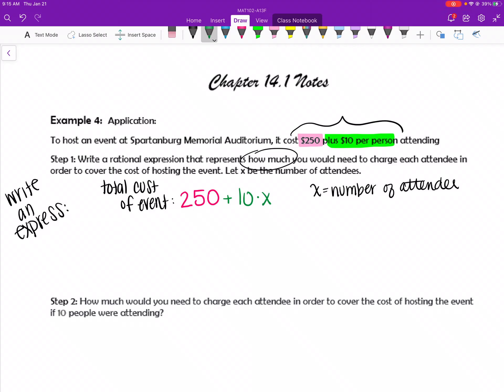And so I want to divide that out by the total number of attendees. So if there were 10 people, I would want each person to pay a part of it because I am dividing up the cost among the total. So for my first part, the total cost of the event is $250 plus 10x divided by x.